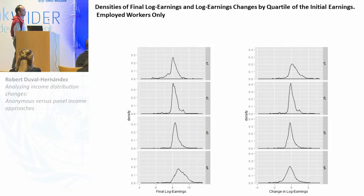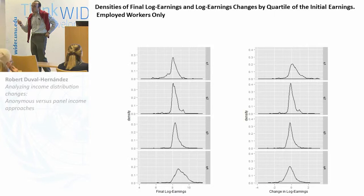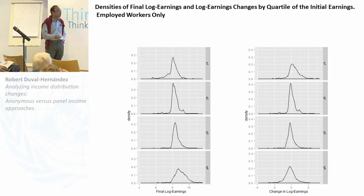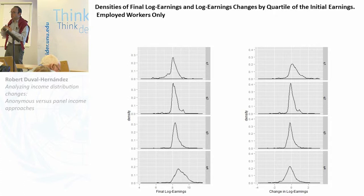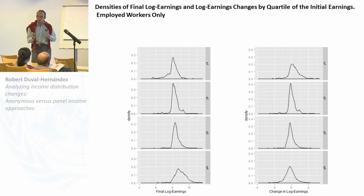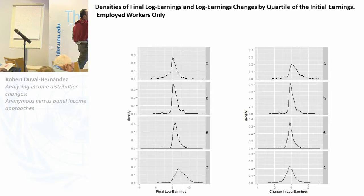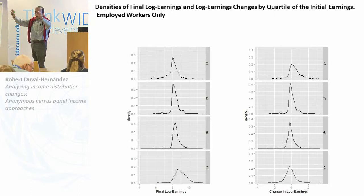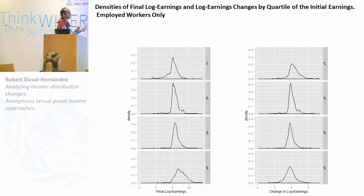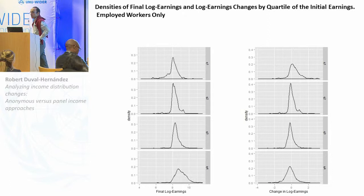The new piece we add is: if we want to compare inequality of initial earnings to inequality of average earnings, we define a measure of how much mobility equalized longer-term earnings — the gap between inequality of initial earnings minus inequality of average earnings. If positive, there was equalization; if negative, disequalization. We apply older decompositions by Fields and by Yun to find out what observable characteristics account for this equalization or disequalization — whether it was changes in returns to education, transitions across formal and informal sectors, or job transitions between occupations.